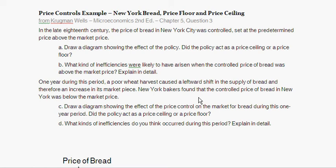In this problem we're going to do a price control example based on a Krugman Wells microeconomics textbook question from chapter 5, which is 'The Market Strikes Back,' chapter 5 question 3. The question asks: in the late 18th century, the price of bread in New York City was controlled — that is, set at a predetermined price above the market price.